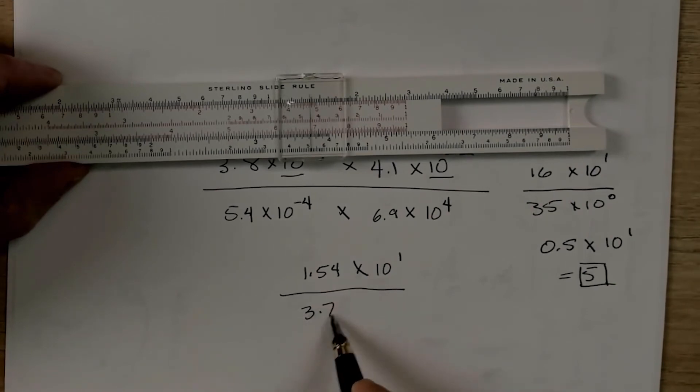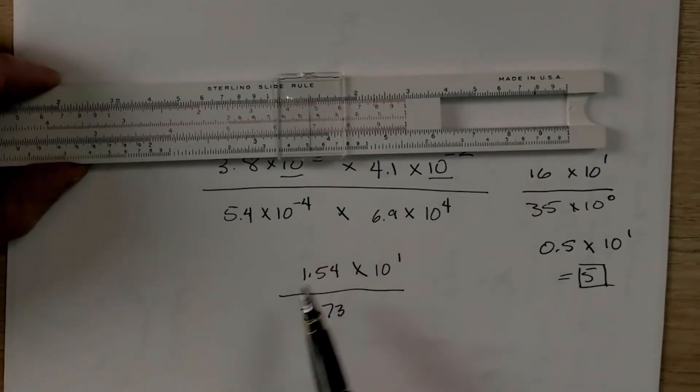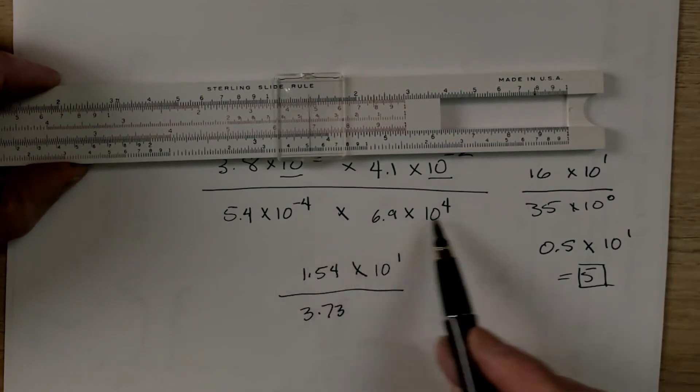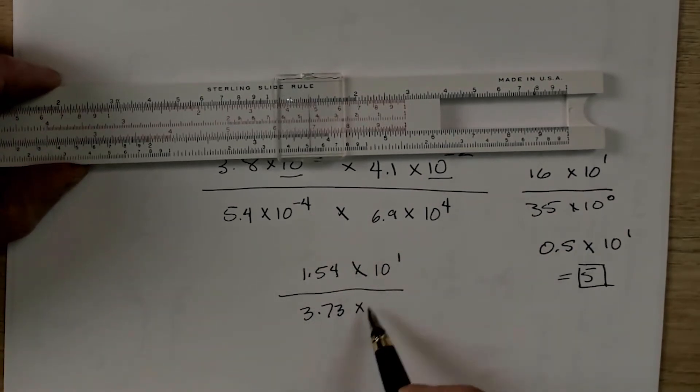And then we're going to read straight down and we're going to get 3.73. And that's times 10 to the what? Minus 4 plus 4 times 10 to the 0.